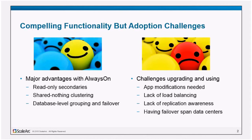Also, as you're doing scaled-out deployments, particularly if you're spanning data centers, you're going to run into some potential timing delays in terms of the success of the replication. So how do you become aware of what that replication lag is and account for that in where you service the traffic? And a lot of folks are trying to move toward active-active operations that span multiple data centers, and having failover that spans those data centers well is also one of our challenges.